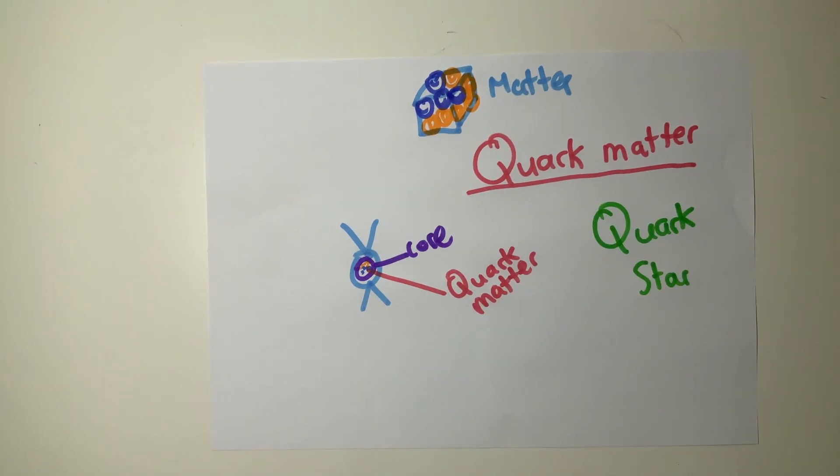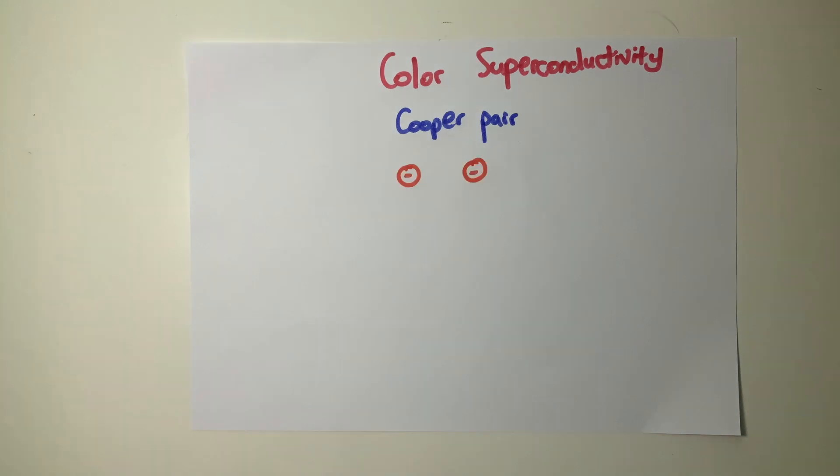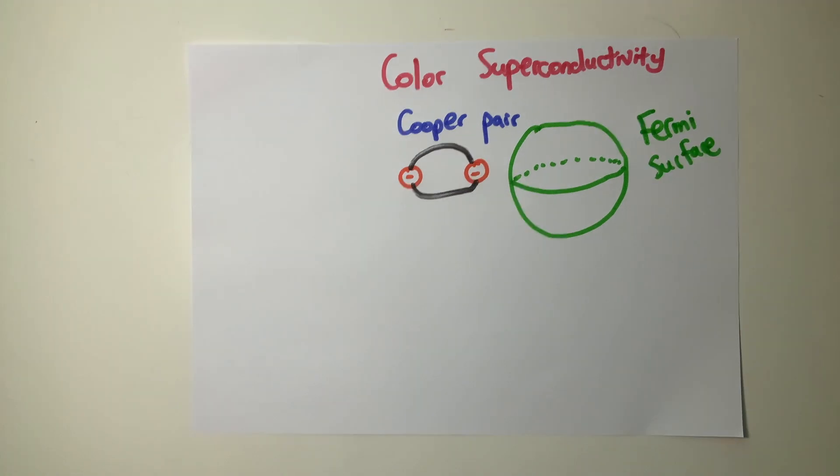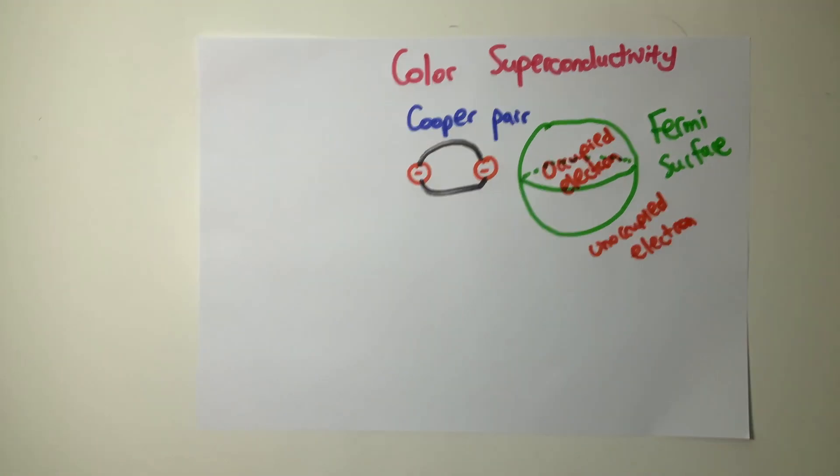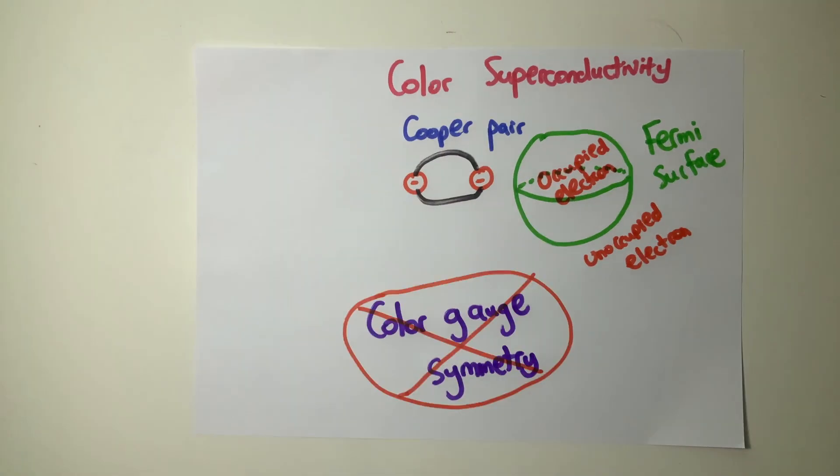Color superconductivity is a state of matter in QCD that contains Cooper pairs, two electrons that orbit each other, near the Fermi surface of the object, a surface that separates the occupied and the unoccupied electrons. Watch our video on intramolecular forces. This property breaks what is known as color gauge symmetry.